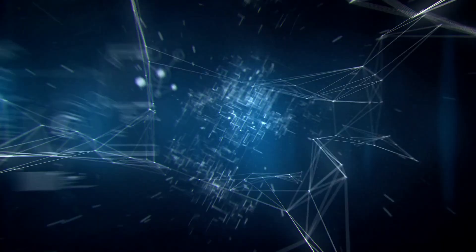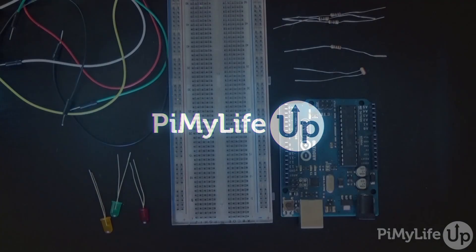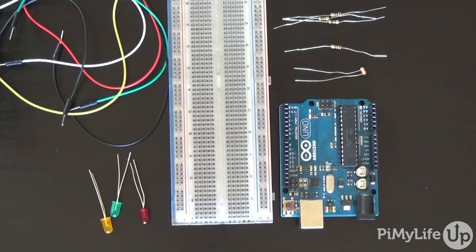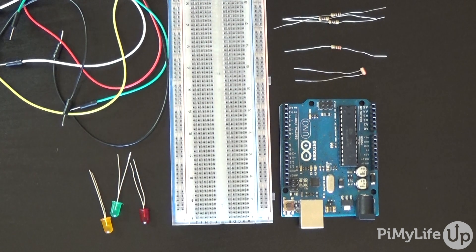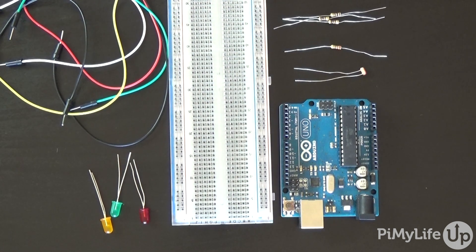Hi everyone, it's Gus from Pi My Life Up, and today we'll be looking at how to set up a photo resistor or LDR on the Arduino. This little device can be extremely handy in a lot of projects where measuring the light is important. This tutorial is incredibly simple, but will hopefully explain and show you how to use a photo resistor in your next project.